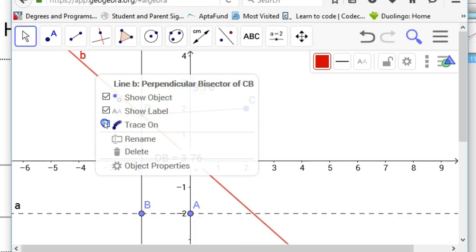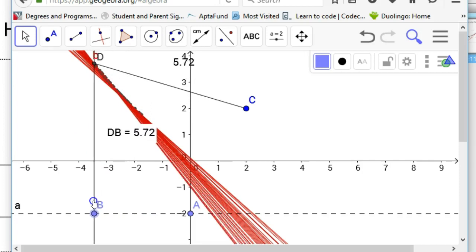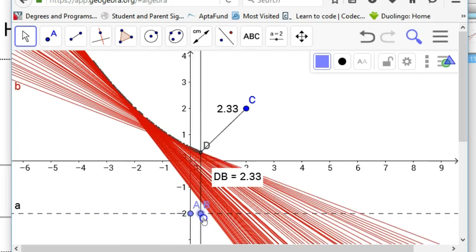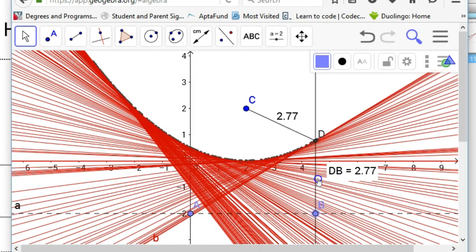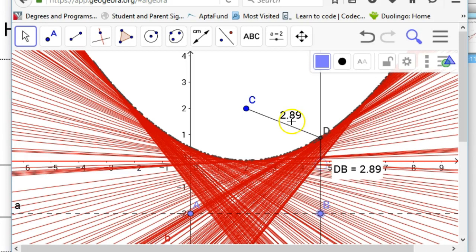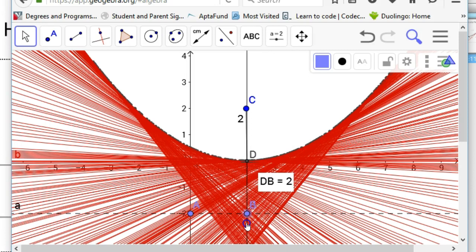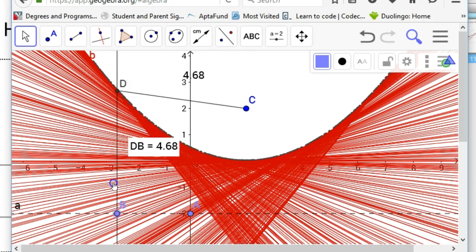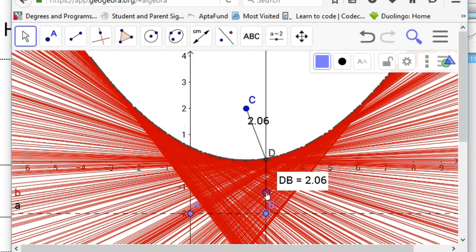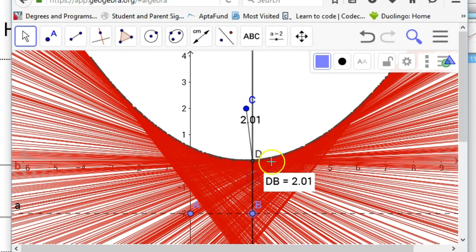What's kind of cool is that that tangent line, that perpendicular bisector, will always trace out a parabola. Notice that this distance here, CD, and the distance DB are both the same, no matter where I'm at. At its closest point it's 2, well that's my vertex of the parabola. They always stay the same, no matter where they're at. That's really what defines a parabola.